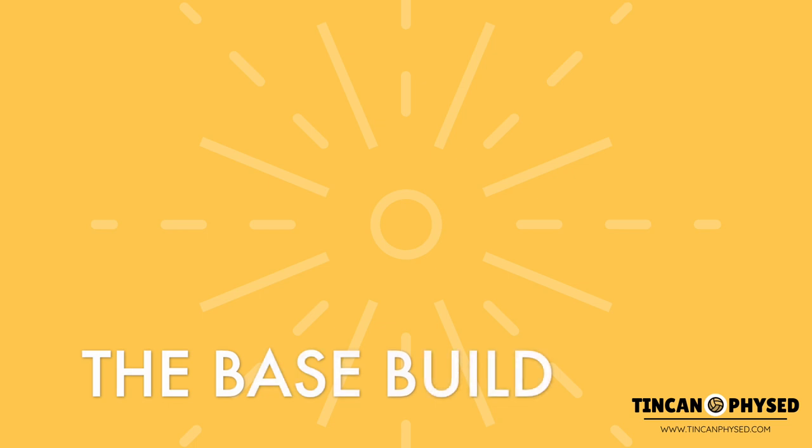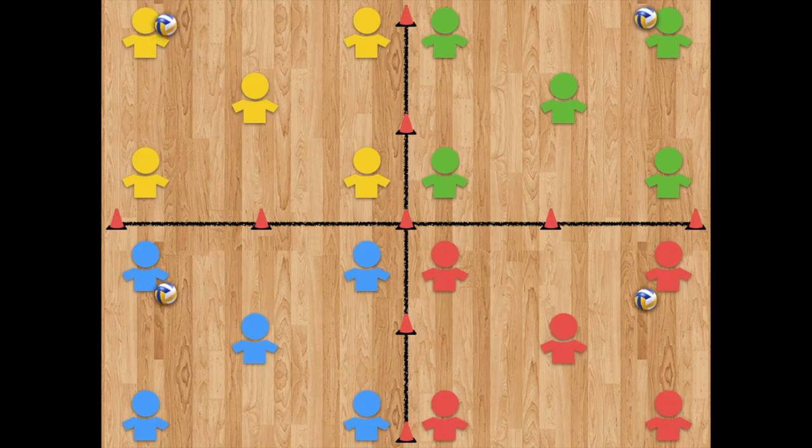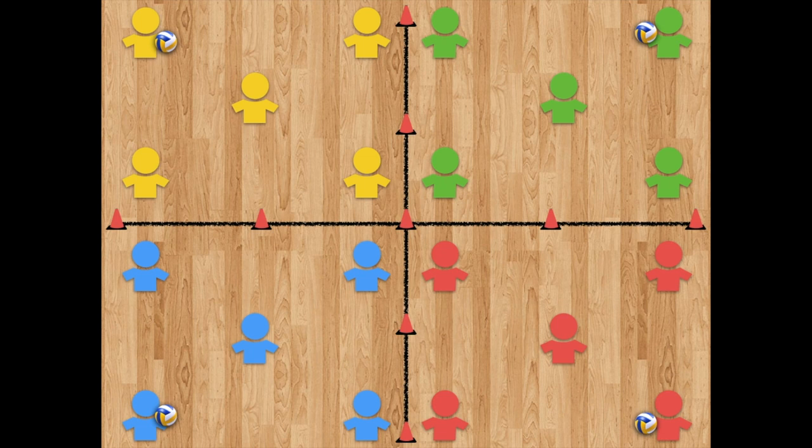Now that we're set up, let's talk about the base build of the game. To start, each team is going to have a volleyball in the farthest corner of their zone. When they serve, they need to serve clockwise into the next zone.